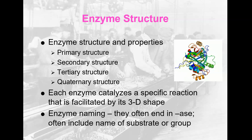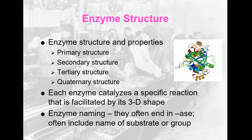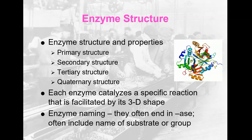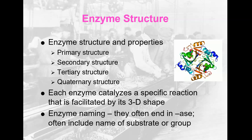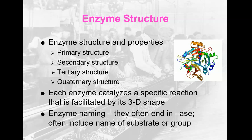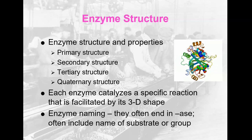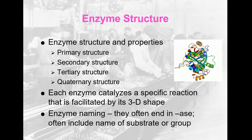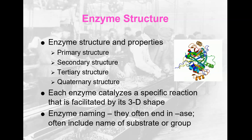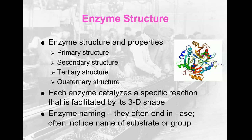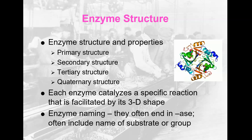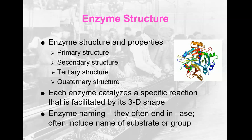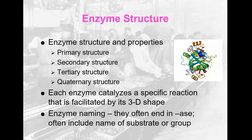Enzymes are proteins. They have a three-dimensional structure and even a quaternary structure. Their primary structure is a sequence of amino acids. The secondary structure is how those amino acids start folding, either in random coils, spirals, or beta pleated sheets. As those amino acids are assembled, they start taking on a secondary structure, and as the secondary structure folds and comes into play, then that tertiary structure, which is the three-dimensional structure of the enzyme, comes into play.